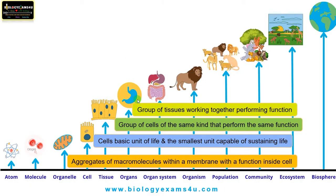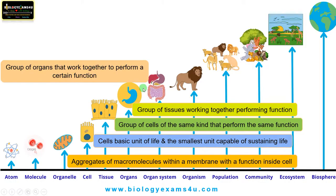A group of tissues working together performing a specific function forms an organ, like the stomach, kidney, liver, brain, etc. Then the next level is the grouping of these organs that work together to perform certain functions, which forms organ systems like the digestive system, respiratory system, muscular system, etc.